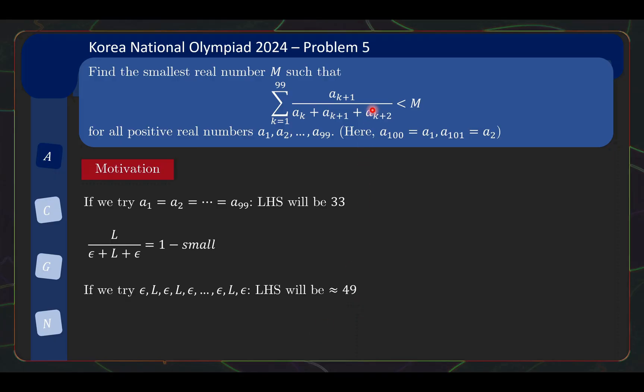Can we get something even better for the left hand side? You might see that since this 99 is an odd number, it seems quite wasteful to start with epsilon L epsilon, because we have more epsilons than L. And you're wasting the epsilons, because even at the end, you have epsilon over L plus epsilon plus epsilon, that is still going to be very small. So maybe you say, can I start with L instead? So at least now I have more L's than epsilon, 50 L's and 49 epsilon.